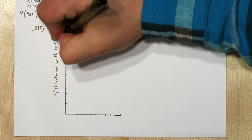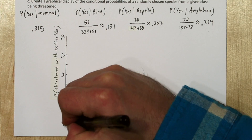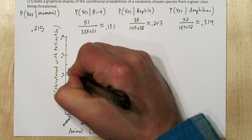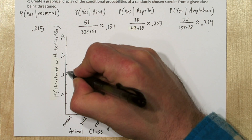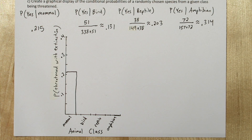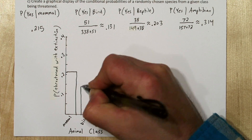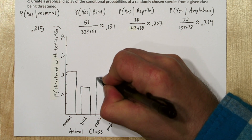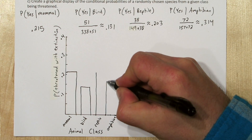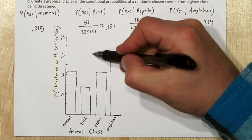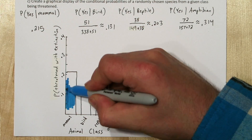Let's create a graph to display this data. Our vertical axis is the probability of being threatened with extinction, and our horizontal axis is animal class — with bars for mammals, birds, reptiles, and amphibians. The probability a randomly selected mammal is threatened is 0.215, a bird is 0.131, a reptile is 0.203, and amphibians all the way up at 0.314. We'll add color to make the graph better.